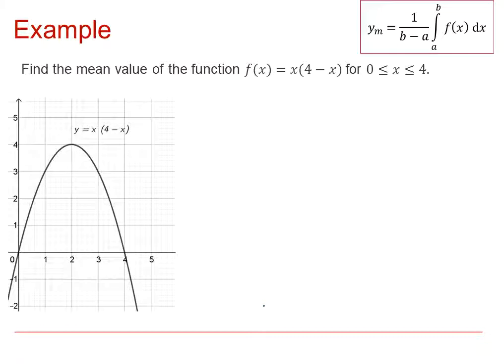In this example, we're going to find the mean value of f(x) where f(x) = x(4 - x) across the range x = 0 to x = 4. We want to find the area underneath this curve and consider that area as a rectangle to find the mean value of this function across that range. Using this formula, a = 0, b = 4, and the height of the rectangle is y_m, the mean value of the function.